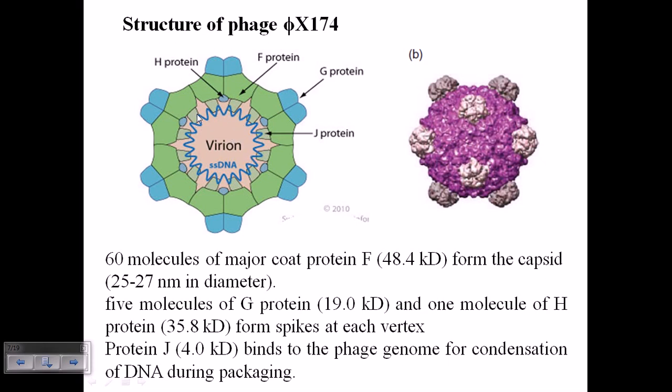Inside this phage, which has a diameter of only 25 to 27 nanometers, it's a very small particle. Folding this large amount of DNA is difficult, so for minimizing that, we need to compact the DNA a little bit. We are doing the compactness of DNA here.